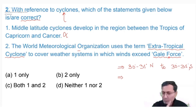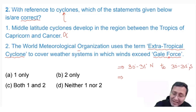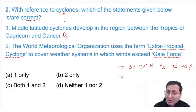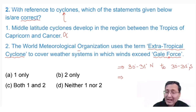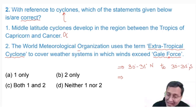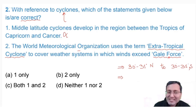One more important difference between tropical and temperate cyclones: in temperate cyclones, the wind speed isn't as strong, whereas in tropical cyclones, wind speeds are massive. Therefore, both statements are incorrect, and the answer would be D.